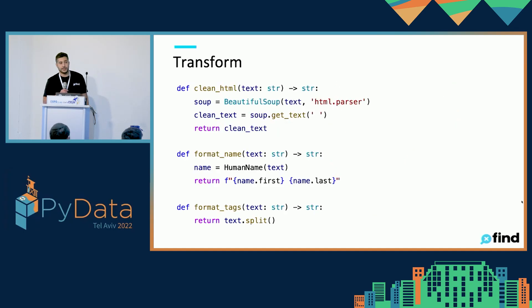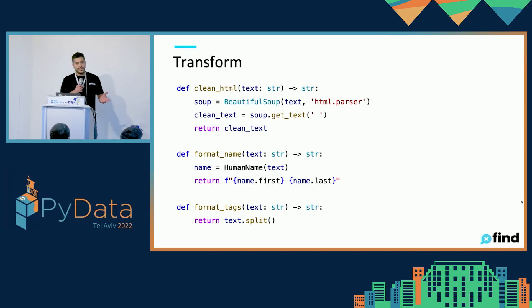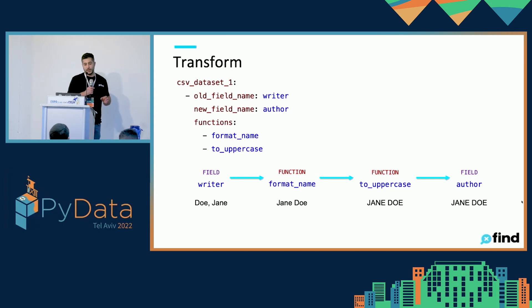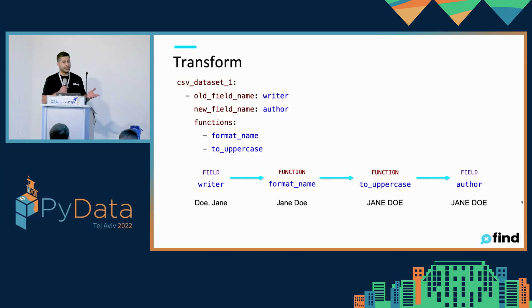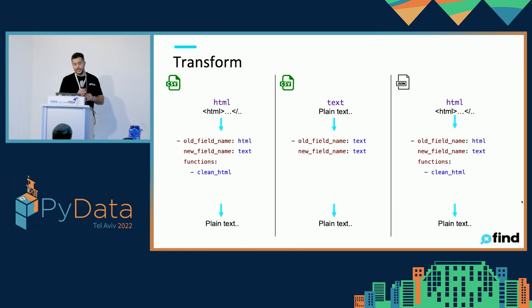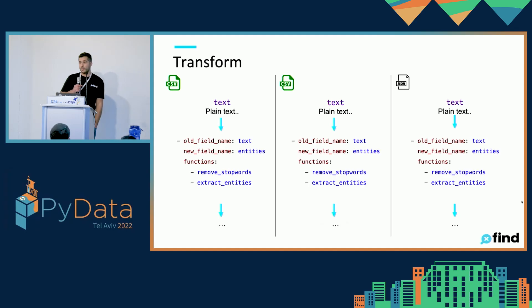What we did was create a couple of files where we placed all our data processing functions so they can easily be invoked. For example, here we have the clean HTML function that removes HTML tags, a format name function, and format tags. We then defined a YAML file as a mapping from old fields to new fields, and added a functions list so we can invoke functions one after another to change each field to whatever we need for our database structure. For instance, if a text field came with HTML we could remove it by invoking clean HTML, or if we wanted to create a new field with entities from that text, we'd write a couple of lines in the YAML file and invoke our extract entities function.